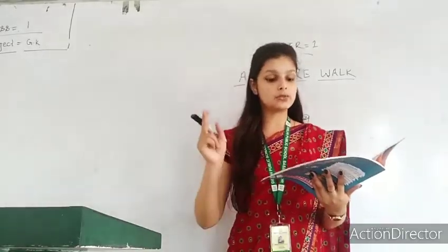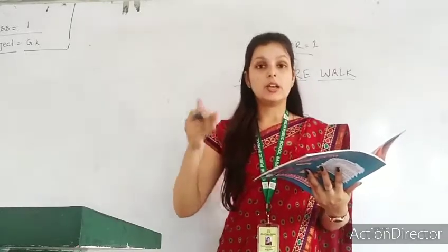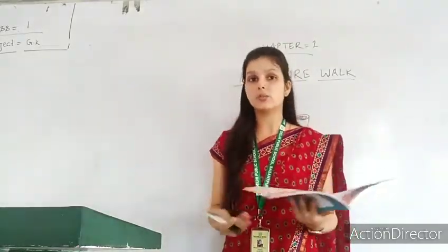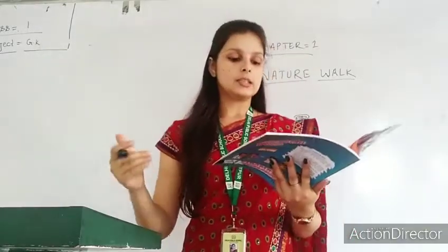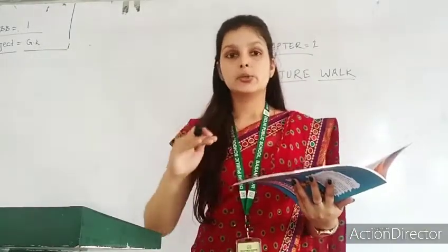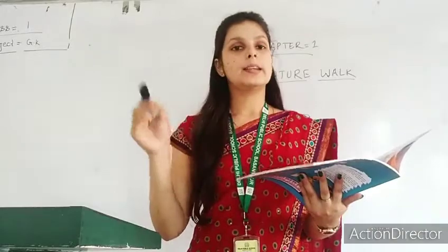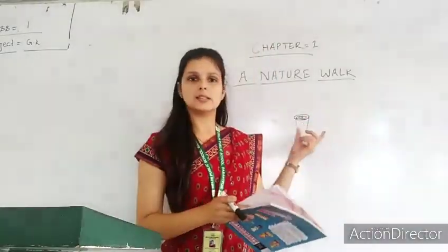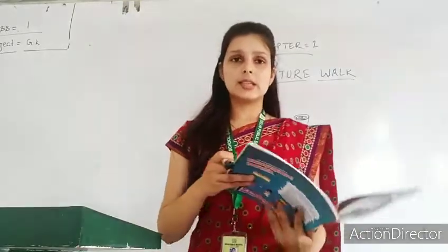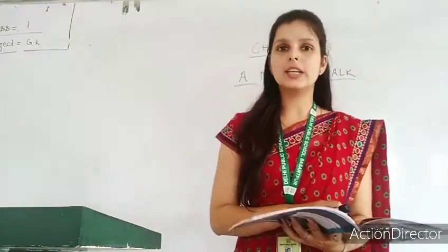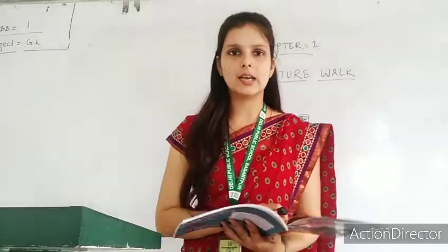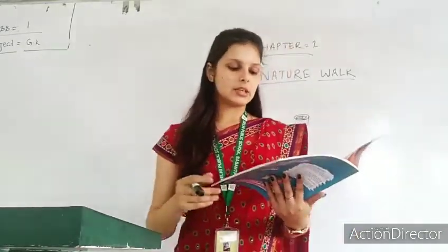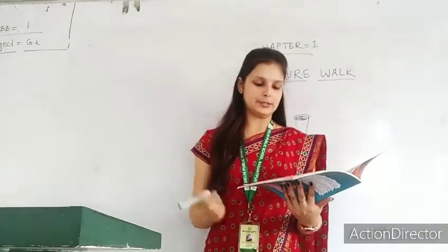And the third one is tree. Tree ka kya hai? Tree ka har saal ek ek layer oopar aata hai tabhi dhire dhire mote hote jaate hain. And jab tree cut hota hai toh cutting ke baad ek ring type dikhta hai, jiske help se aapko tree ka age pata lag sakta hai ki woh tree kitne saal ka hai jo ki cut chuka hai. Thik hai, yeh bhi interesting tha.